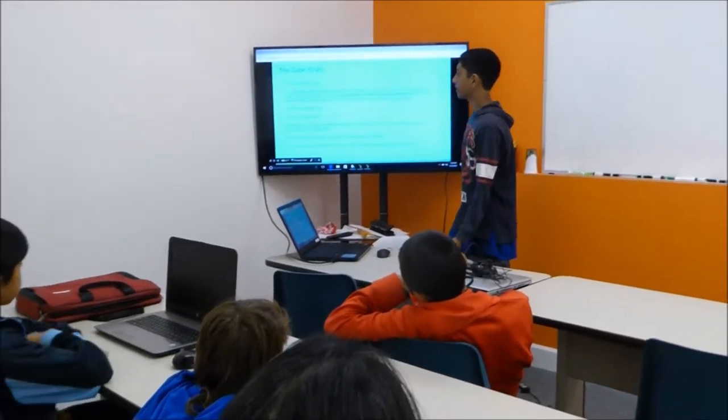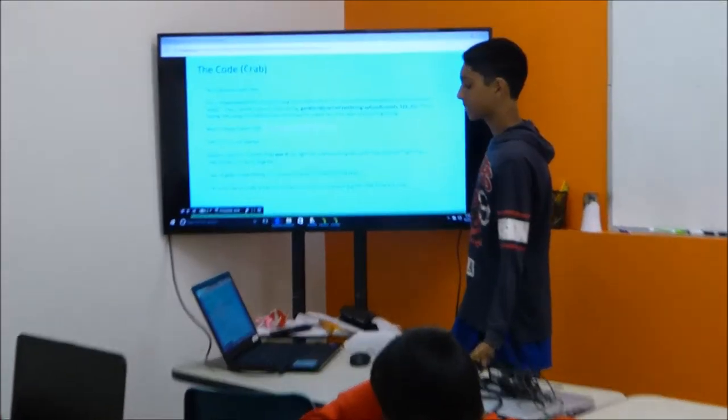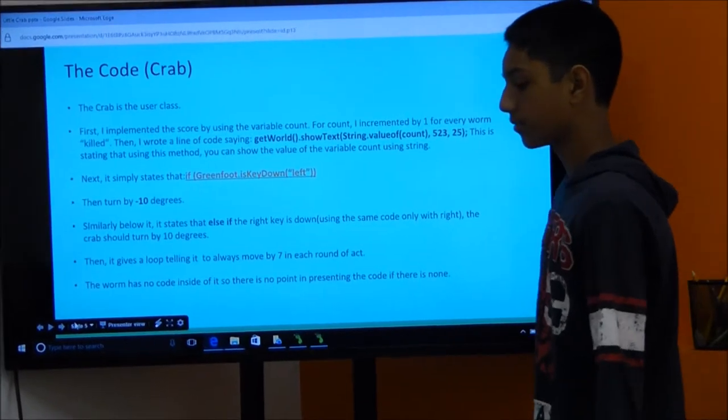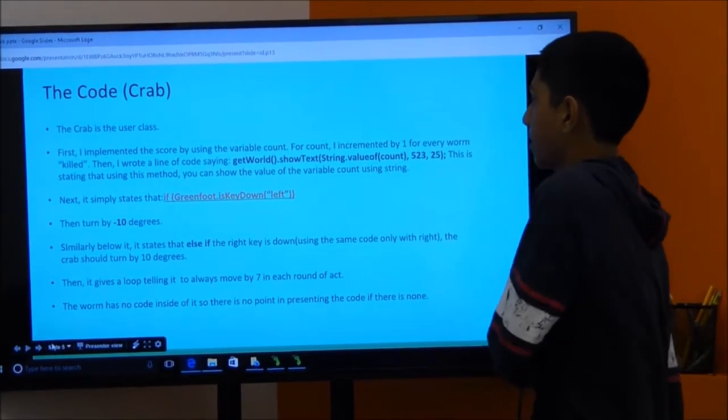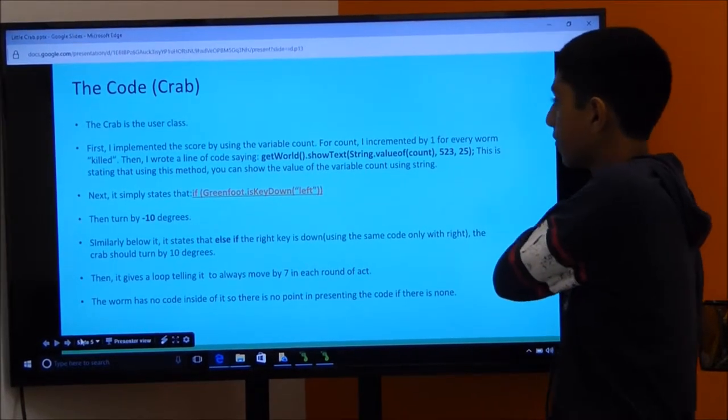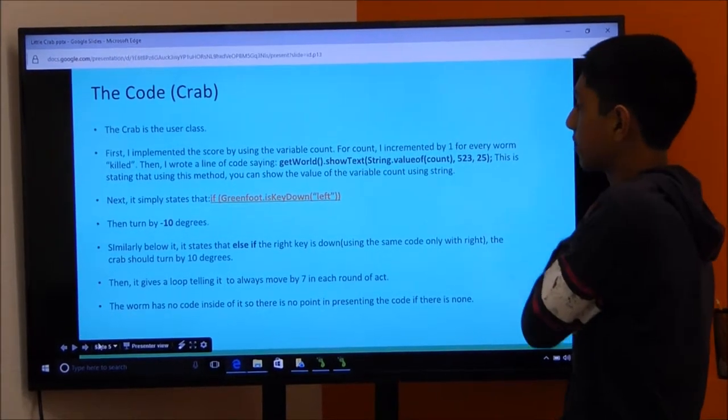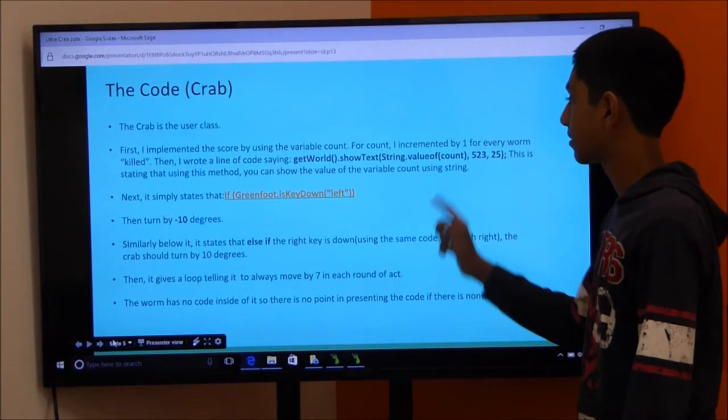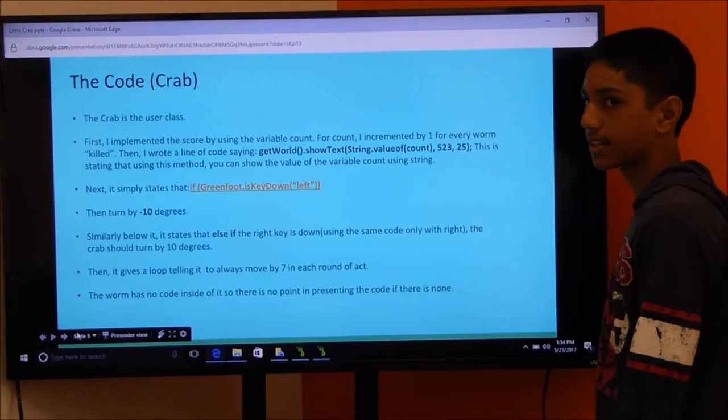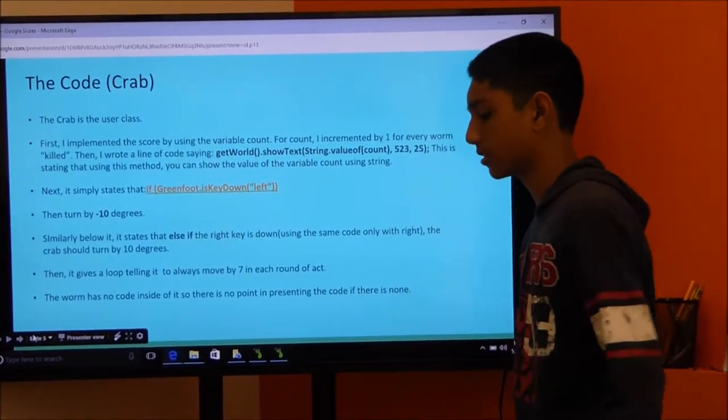And next is the crab. The crab is the user-controlled class. And it is involved in putting the score for the game. So, first to implement the score, I used the variable count. And I incremented by one every time a worm was killed. And then I got the code and put this, which basically means show the value of count on the screen at this coordinate. And that shows you what the score is at all times.